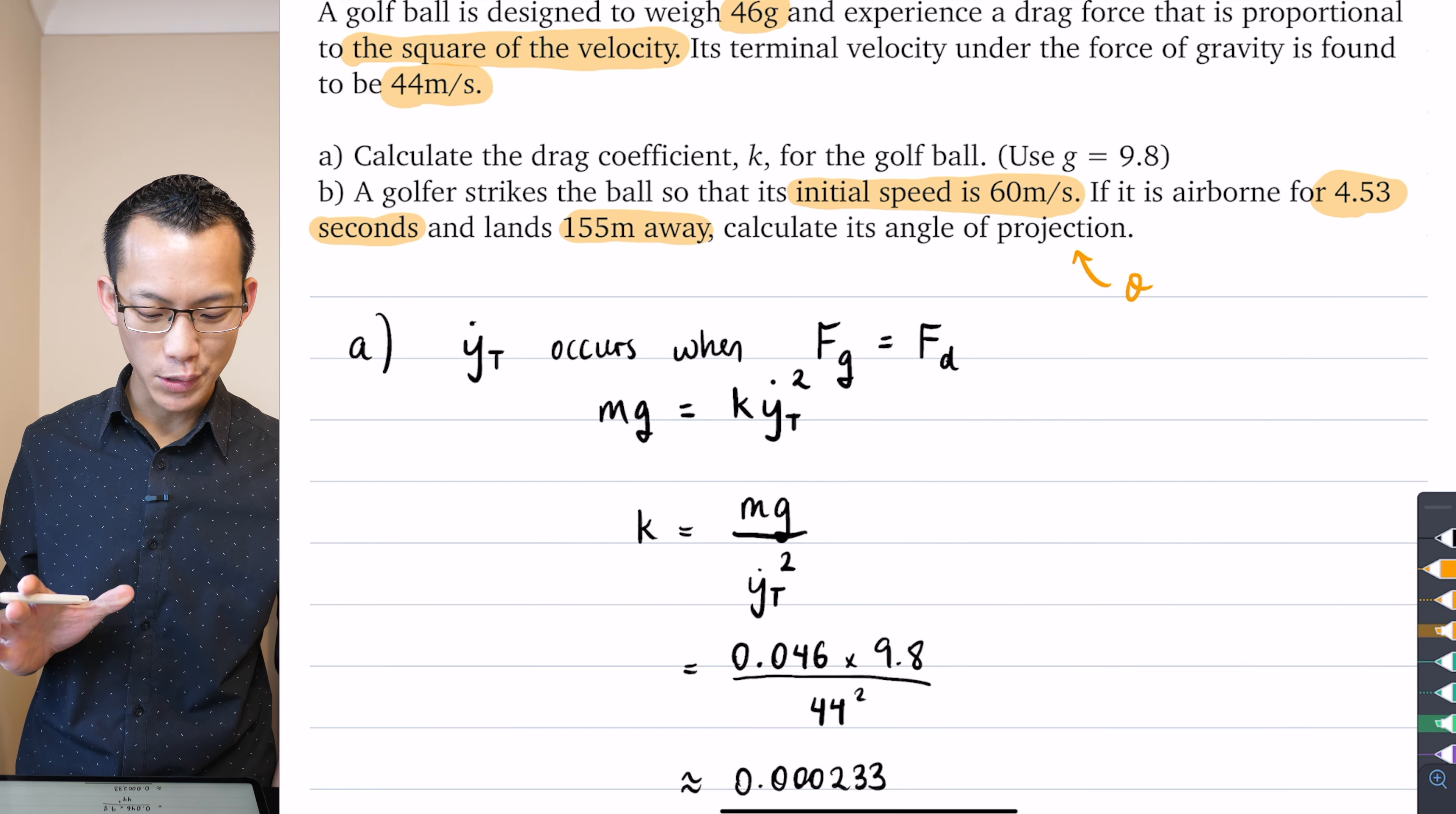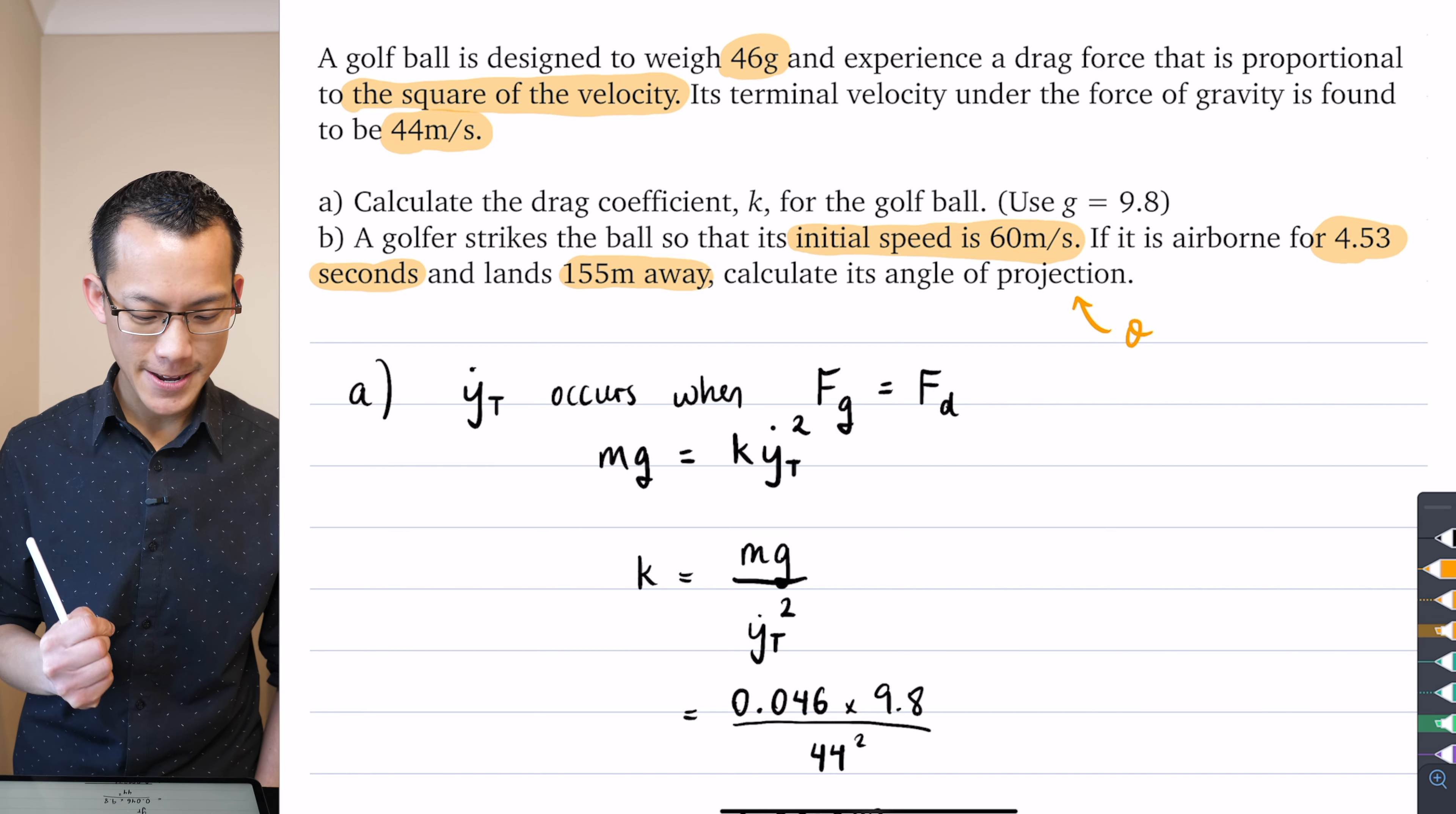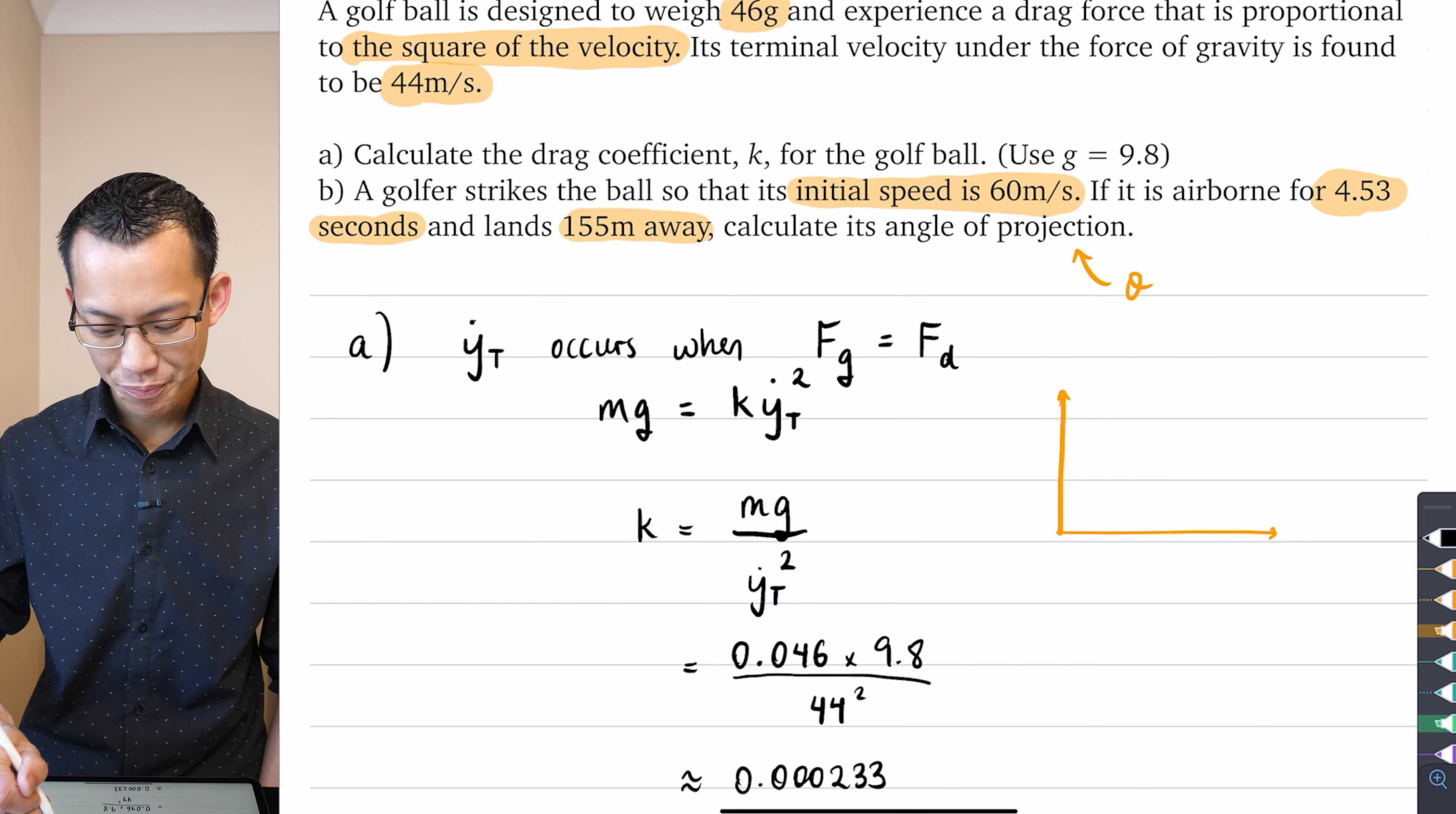Well, I want you to have a look at the information that's provided. Did you notice in part A it gave us this clue - it said gravity is 9.8, you don't need that, right? And that's sort of the nudge to say it's terminal velocity you're considering, this is vertical. In part B the question says it lands 155 meters away.